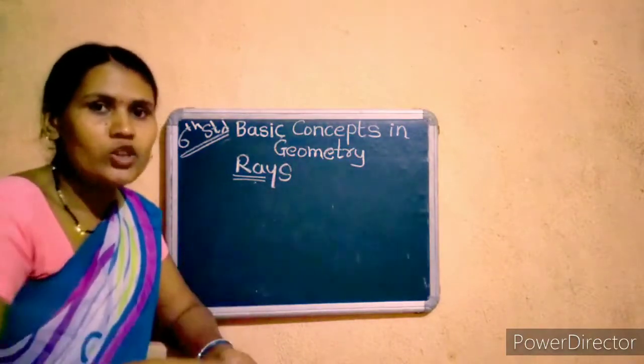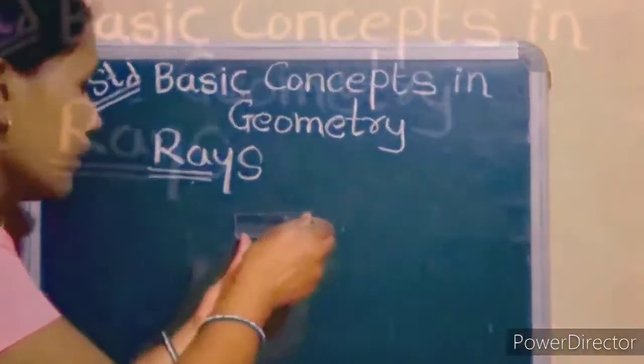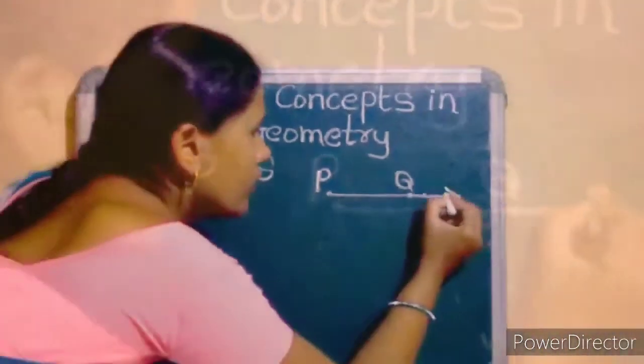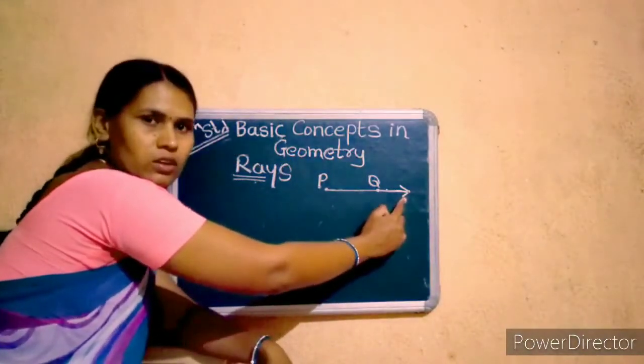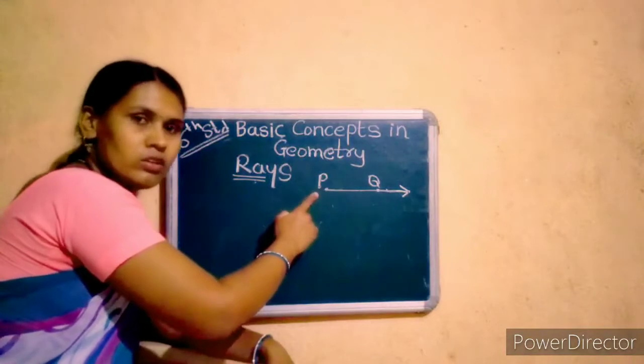For example, I show you here by drawing. And I draw here an arrow.